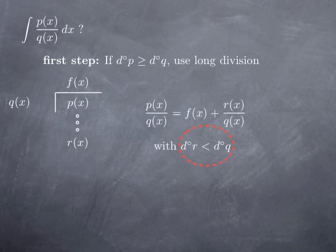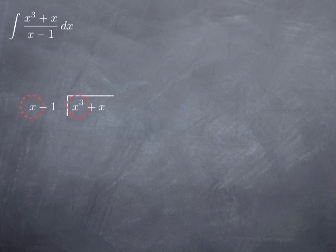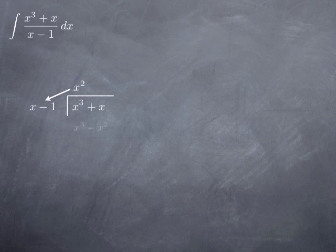Let's review long division with the example of integrating (x³ + x) divided by (x − 1). The degree at the top is not less than the degree at the bottom, so we start with long division. We divide x³ + x by x − 1. We begin by dividing x³ by x, giving x². We multiply x² by (x − 1) to get x³ − x², then subtract to get x² + x. Since x² is not of degree less than x, we iterate: dividing x² by x gives x.